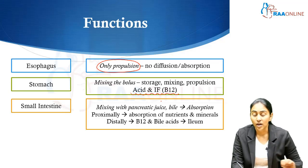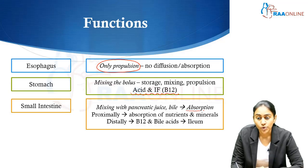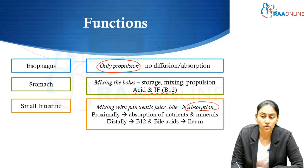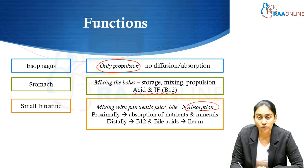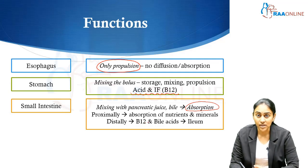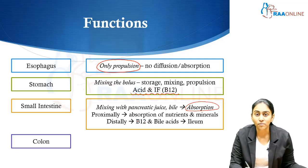Then we have the small intestine. The primary function of the small intestine lies in absorption. It mixes the food delivered from the stomach with the pancreatic juice and bile, ultimately resulting in absorption. Majority of the nutrients are going to be absorbed here. Approximately, absorption of nutrients, minerals, and vitamins takes place proximally, while distally, B12 and bile acids are going to be absorbed in the ileum.